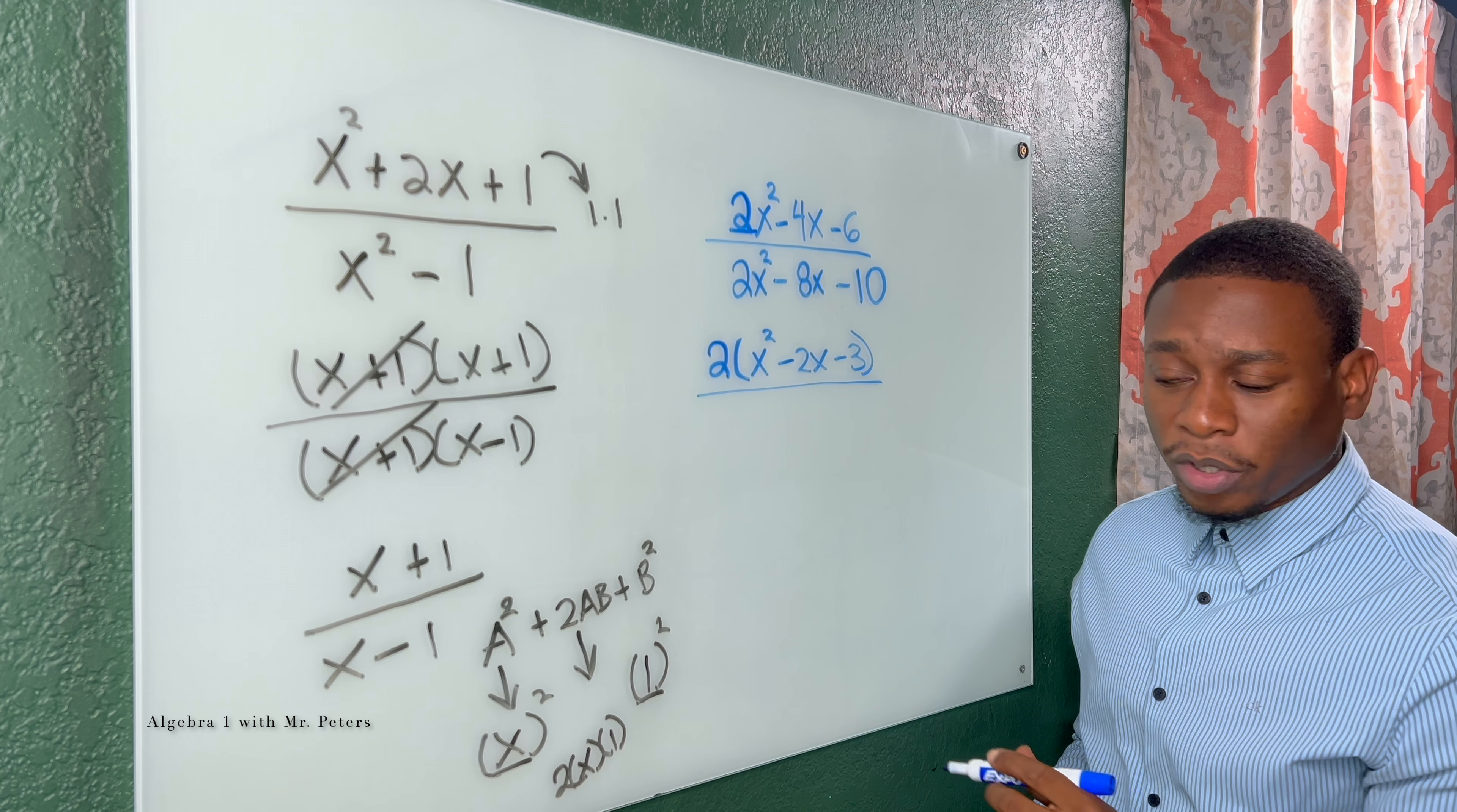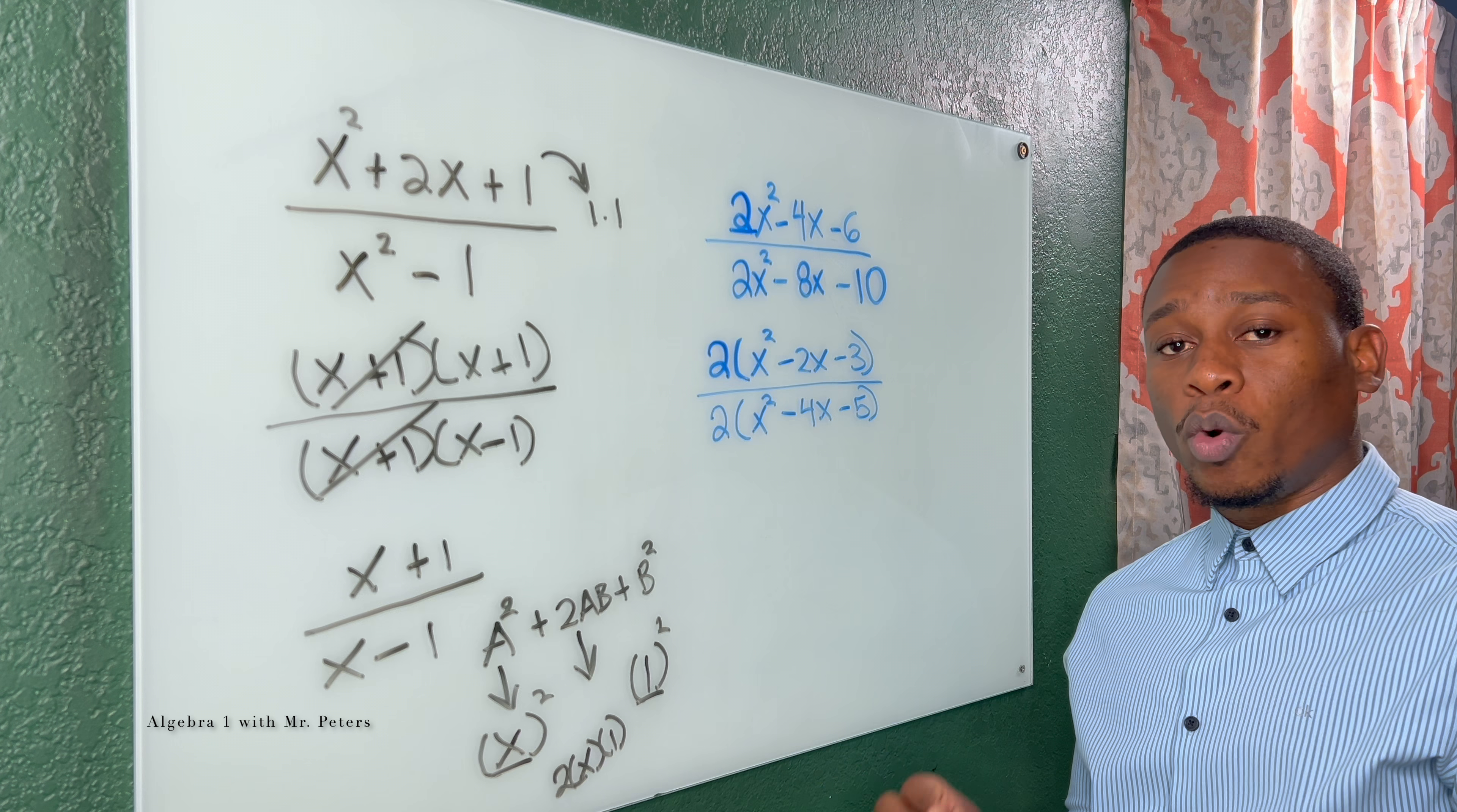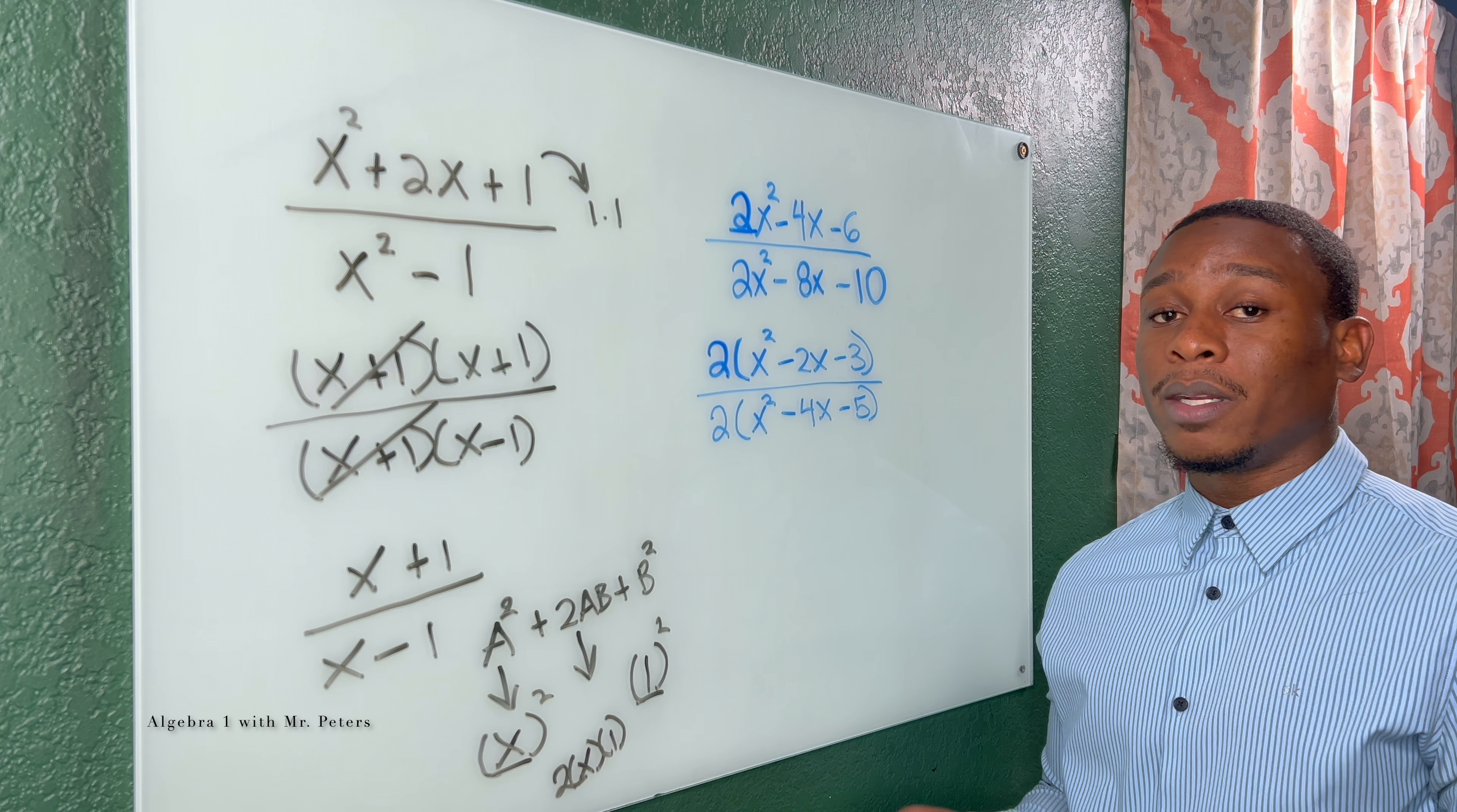And then on the bottom, when we do the same step, we have 2 times x squared minus 4x minus 5. Now if anybody's asking or wondering, what if I could not divide all three of those terms by 2? You could always use the slip and slide method, aka the AC method.